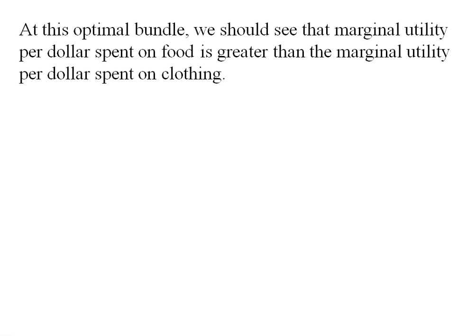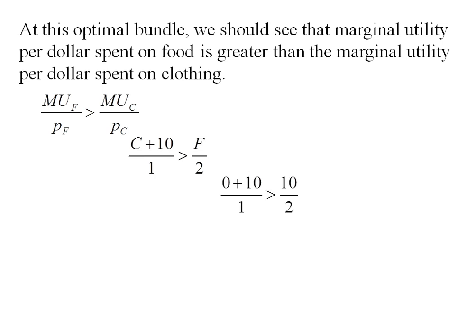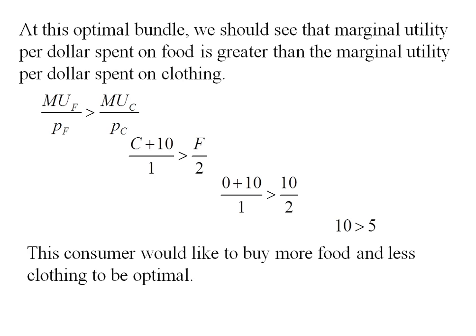We should also verify that the marginal utility per dollar spent on food exceeds the marginal utility per dollar spent on clothing. MU_F / P_F = (C + 10) / 1, and MU_C / P_C = F / 2. Plugging in C = 0 and F = 10: (0 + 10) / 1 = 10, and 10 / 2 = 5. Since 10 > 5, this consumer would like to buy more food and less clothing — confirming the corner solution is optimal.